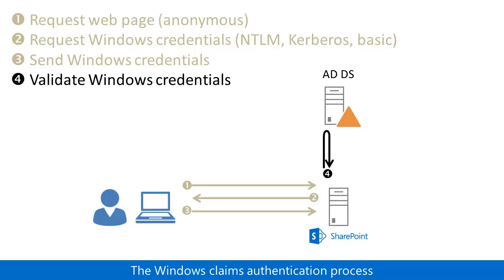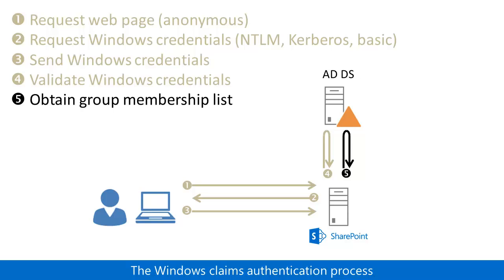The SharePoint server then validates the Windows user credentials with an ADDS domain controller, which responds with a Windows security token. The SharePoint server then queries the domain controller for the list of security groups to which the user belongs.